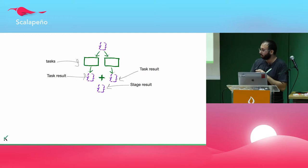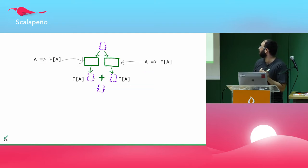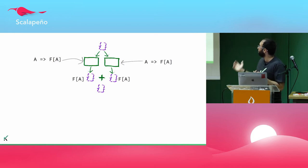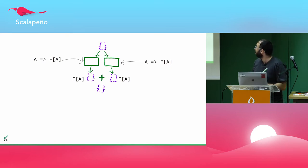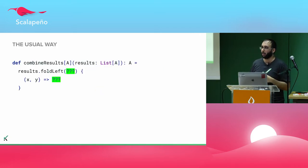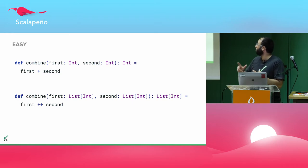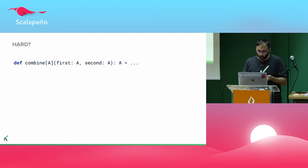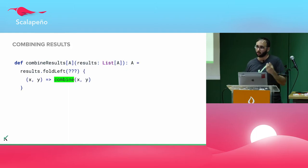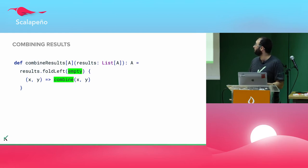First, what we need to do is run the tasks and combine their results. Tasks are functions from A to F of A, so the results are F of A themselves. We know nothing about F and nothing about A — how can we combine them? How do we usually combine lists of stuff in Scala? We can use fold left, but it requires an initial value and a combine function, and we don't have either of those for this abstract A type. If we had a combine function for A's, we could put it as the accumulation function. And if we had an empty value for those A's, we could use it as the initial value for the fold.